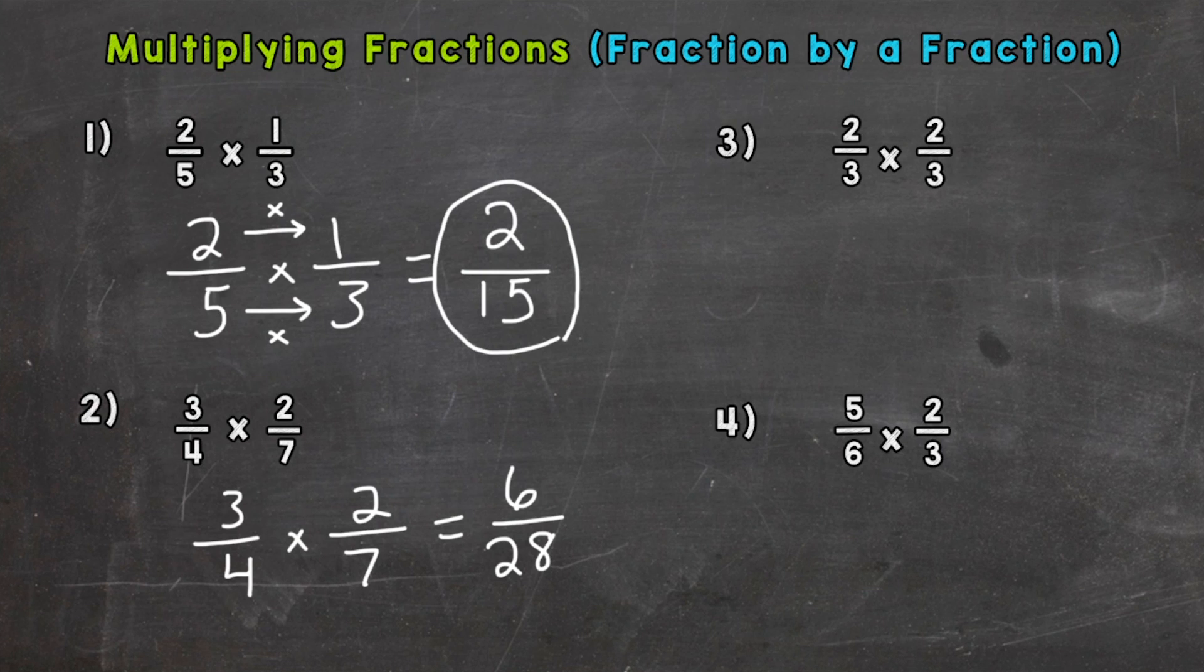The greatest common factor between the two is two. So six divided by two is three, twenty-eight divided by two is fourteen, so our simplified answer is three-fourteenths.